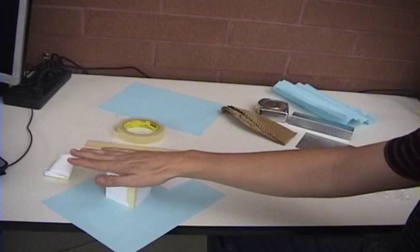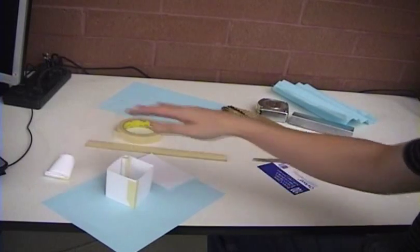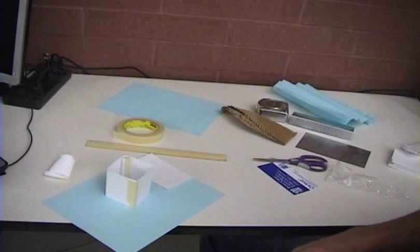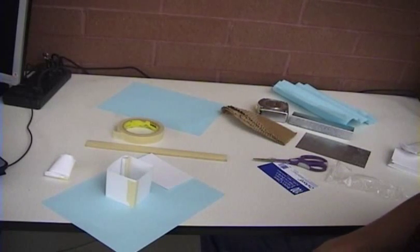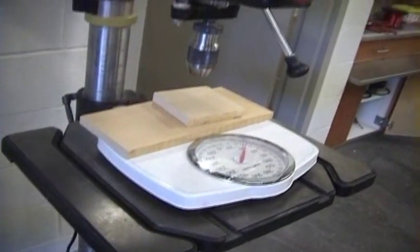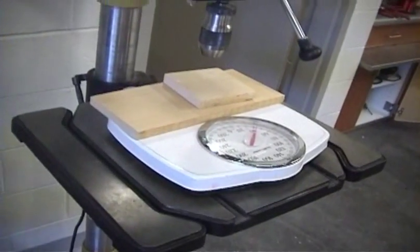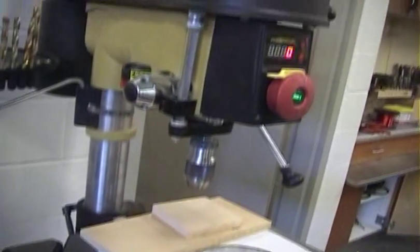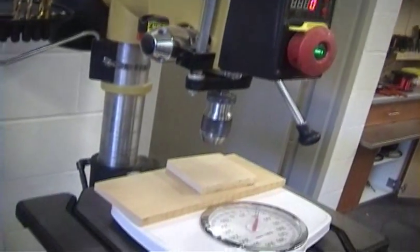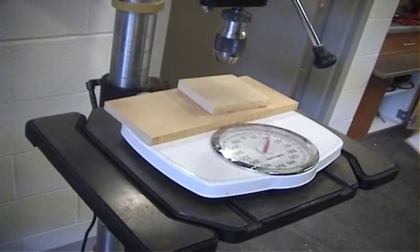So, how do we test this? Because we want to be able to find out exactly how much weight this holds. I have a trick for that. So, I'll go out to the shop and show you how I test the strength of these. Alright. For testing, basically all I do is get a bathroom scale, some pieces of wood, and use a large drill press. If you have an arbor press or something similar, that'll work.